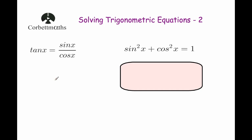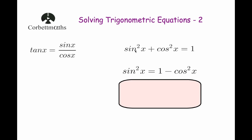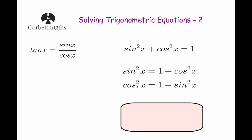Let's have a look at two trig identities which may be useful for these examples. The first is tan x equals sin x divided by cos x. Another useful identity is sin squared x plus cos squared x equals 1. Rearranging, sin squared x equals 1 minus cos squared x, and cos squared x equals 1 minus sin squared x. These identities are going to be very useful in the examples we're about to look at.